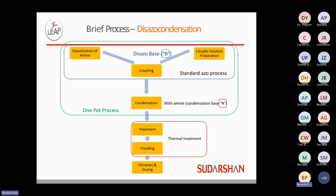The disazocondensation high-performance process starts the same way to create the disazo base following the standard azo process. The added step of the condensation reaction is then applied onto that disazo base, followed by similar thermal treatments as used for the benzimidazolone type. These pigments are intended to be very large, high molecular weight particles. Only about 14 or so disazocondensation products are still being used in the industry, and this is one chemistry that Sudershan doesn't currently have.